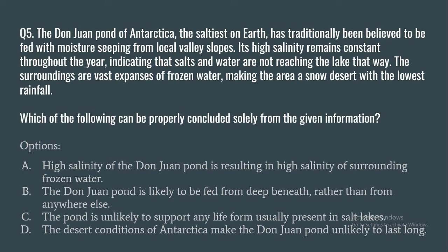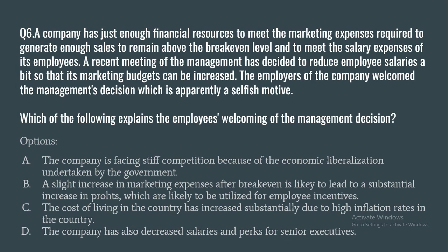Question 5: The Donjon Pond of Antarctica, the saltiest on Earth, has traditionally been believed to be fed with moisture seeping from local valley slopes. Its high salinity remains constant throughout the year, indicating salts and water are not reaching the lake that way. The surroundings are vast expanses of frozen water making the area a snow desert with the lowest rainfall. Which of the following can be properly concluded solely from this information? Options: (a) the pond's high salinity is causing high salinity of surrounding frozen water, (b) the pond is likely fed from deep beneath rather than from anywhere else, (c) the pond is unlikely to support life normally present in salt lakes, (d) desert conditions make the Donjon Pond unlikely to last long.